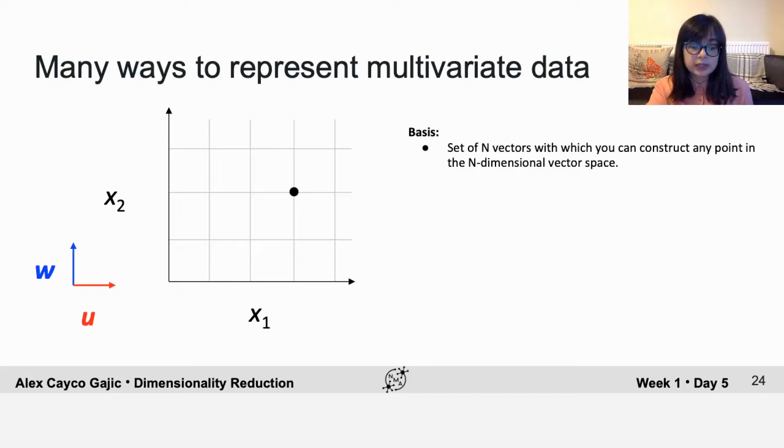We're used to using a specific choice of basis called the standard basis, in which your first basis vector is one unit in the direction of the activity for neuron 1, and the second basis vector is one unit in the direction of neuron 2.